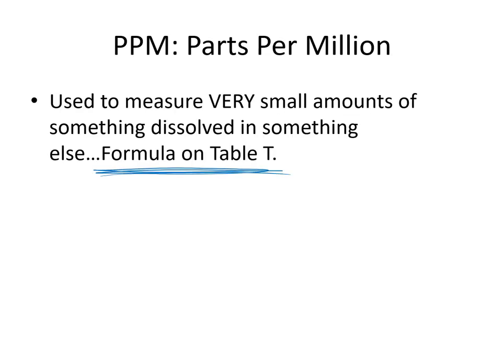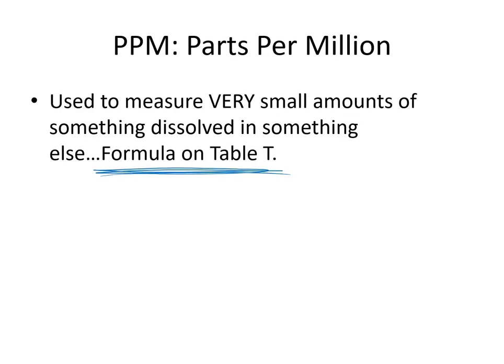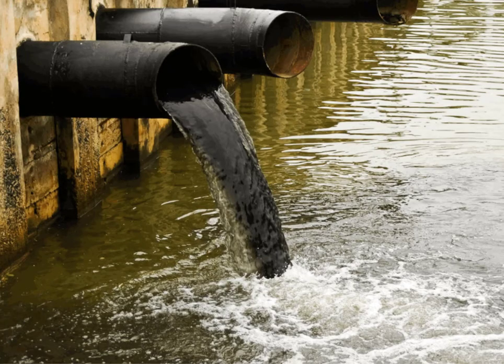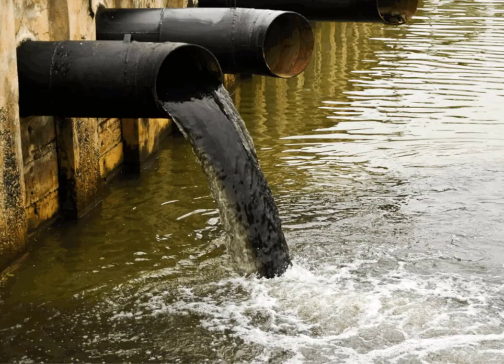An example of when we might use parts per million would be when the EPA is doing a pollution study. This often happens when they think a factory is perhaps dumping waste into a waterway like some kind of effluent into a river or stream. They'll do a study on that water, test it.